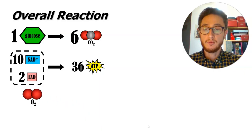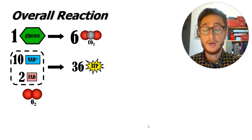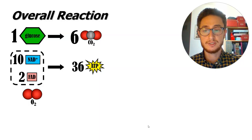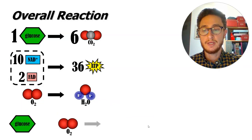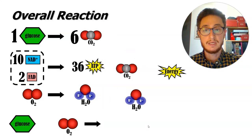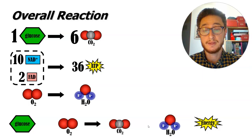In order to keep the electron transport chain going, we needed that final electron acceptor — oxygen. When oxygen was reduced and accepted those extra electrons, it produced water. So if we summarize everything together: our reactants are glucose plus oxygen, our final products are carbon dioxide and water, and we've produced usable energy in the form of 36 to 38 ATP. Ladies and gentlemen, that is cellular respiration.